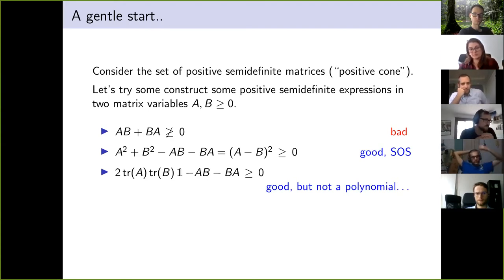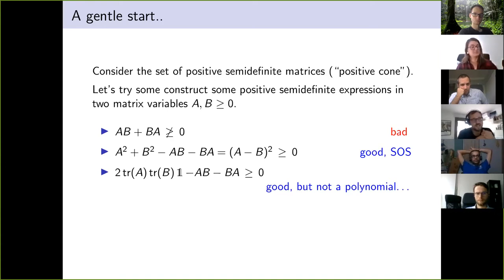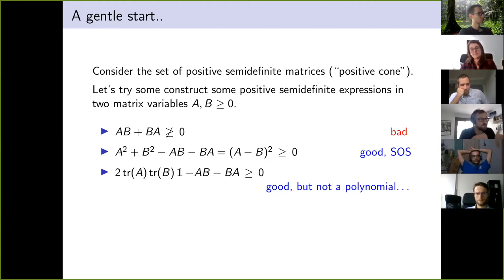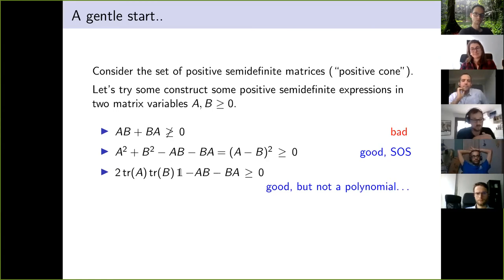Now look at the last example: two times tr(A)·tr(B) times the identity matrix, minus AB minus BA. You can see this is likely positive semi-definite by looking at eigenvalues, because A times B minus B times A is a Hermitian matrix and its largest eigenvalue is bounded by two times the trace of the product. So this positive semi-definite expression is good in principle, except it's not a polynomial — it contains traces.